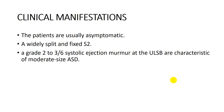The characteristic auscultatory finding is wide and fixed splitting of the second heart sound — this is characteristic for ASD. Also on auscultation, there is a soft ejection systolic murmur, grade 2 to 3, usually in the pulmonary area. As there is increased pulmonary blood flow, the murmur is due to overflow across the pulmonary valve, causing an ejection systolic murmur at the pulmonary area, in moderate to large size ASD.